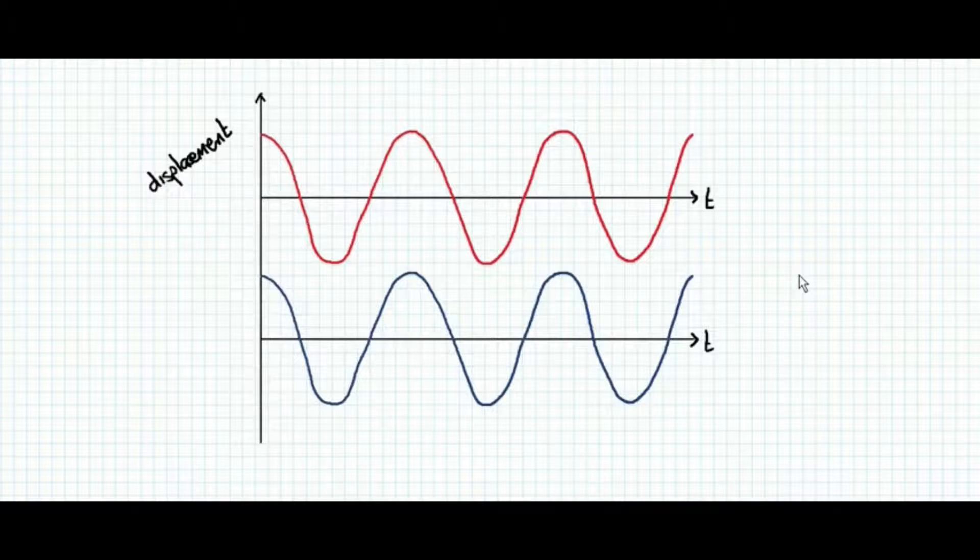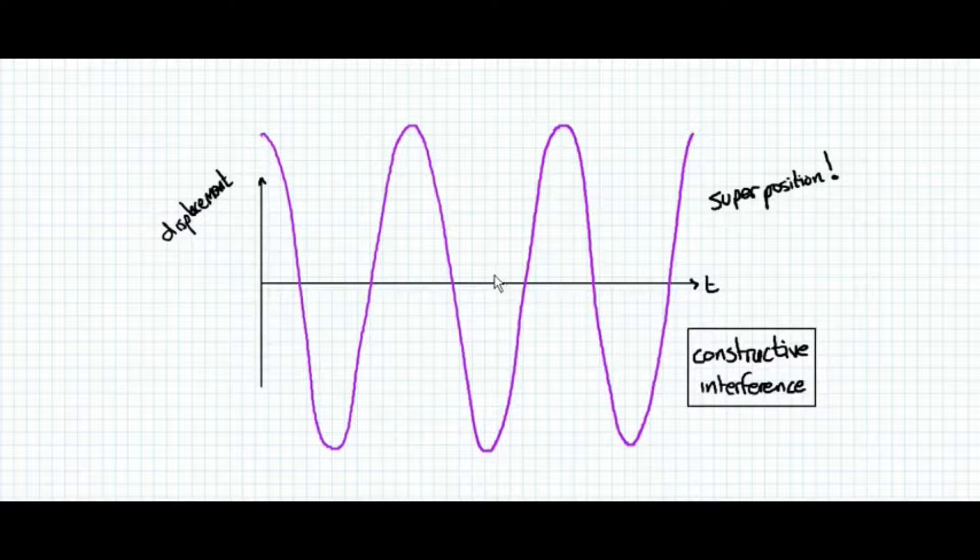The two waves that we added together both agreed on whether they wanted positive displacement at a certain time, or negative displacement at a different time. And because they always agree, the influence is greater. It is the sum of both influences.